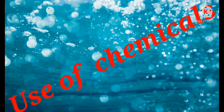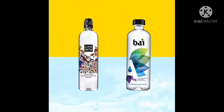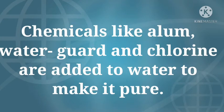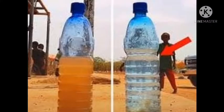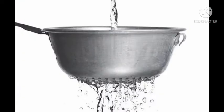Use of chemicals. We can use chemicals to purify water. Chemicals like alum, water guard, and chlorine are added to water to make it pure. So let's take a look at some of those chemicals — you can add them to the dirty water.